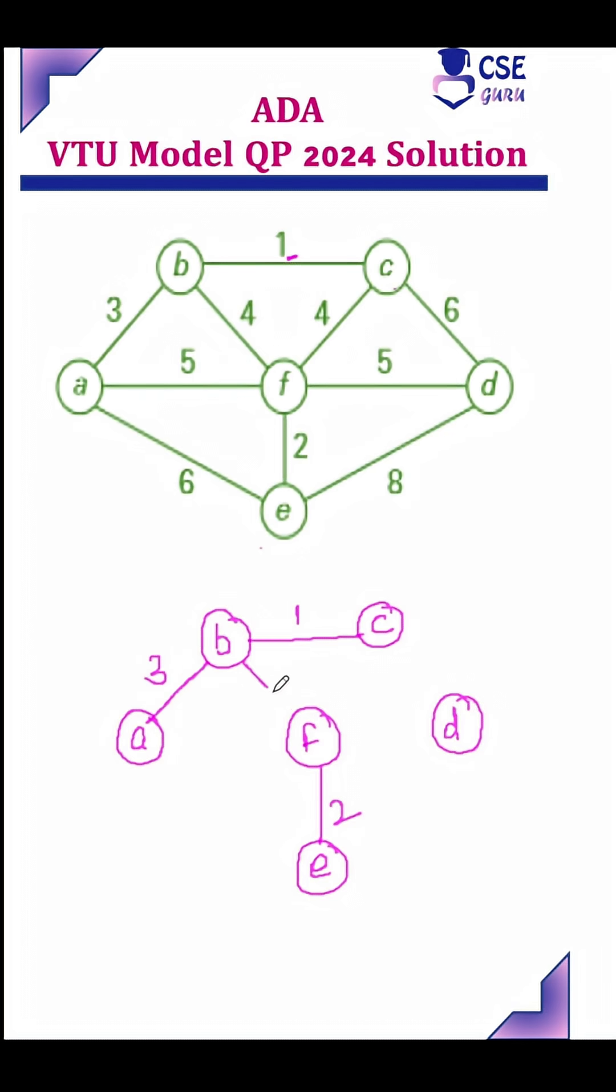Next least cost edge is BF. Inclusion will not form a cycle. Next least cost edge is CF. If you are including this edge, it forms a cycle. So exclude this edge.